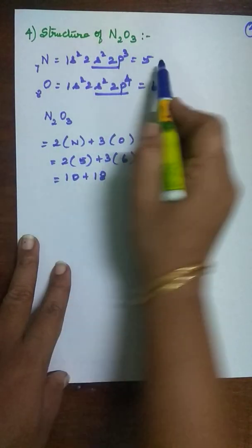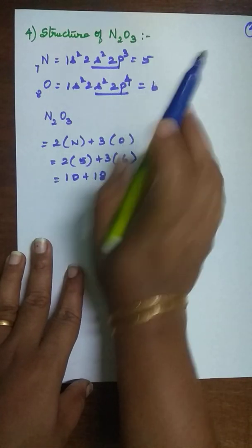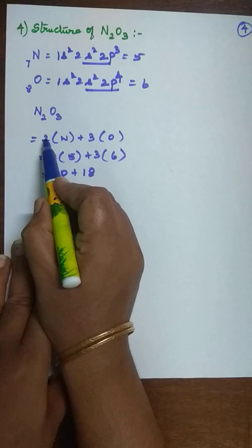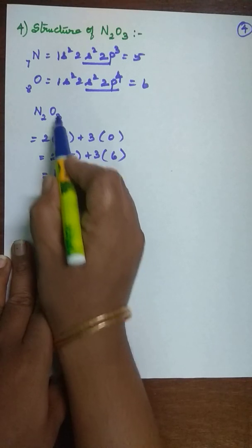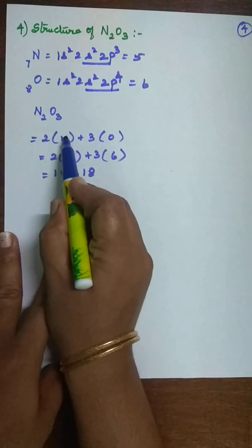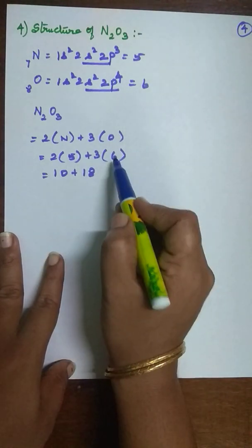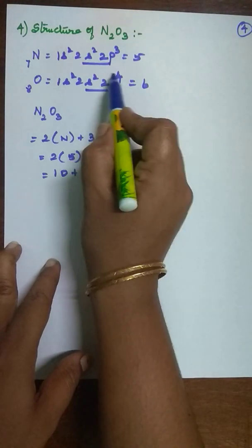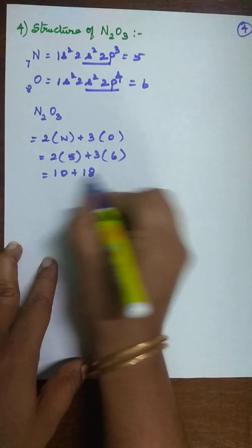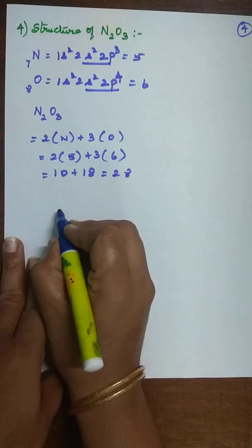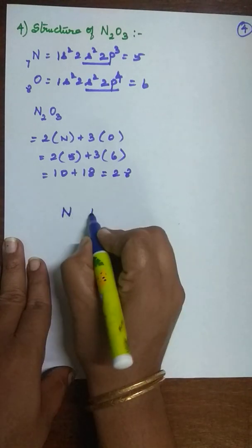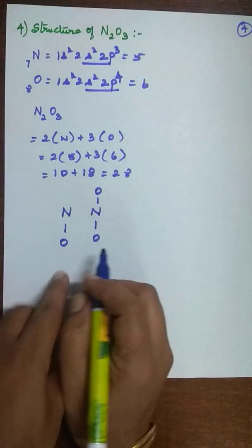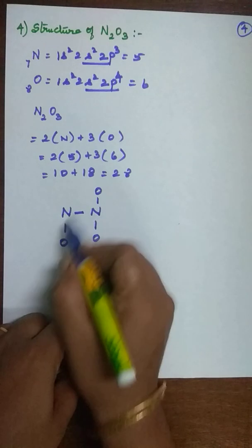Next we will look at the structure of N₂O₃, nitrogen trioxide. For nitrogen, the valence electron count is 5, and for oxygen it is 6. N₂O₃ contains 2 nitrogen and 3 oxygen atoms. So the total valence electrons are: 2×5 plus 3×6, which is 10+18=28. To draw the structure, place two nitrogen atoms connected to each other, with one oxygen on one side and two oxygens on the other side, connected by single bonds first.